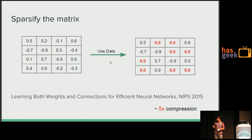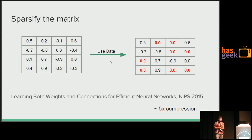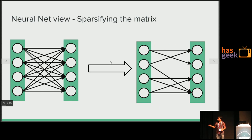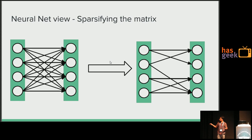This is one transformation commonly used to compress neural networks. Once you have a trained neural network with a dense matrix, you convert that dense matrix to a sparse matrix — an optimization problem which takes into account data to create sparse matrices. In the neural network view, many connections between layers become missing because they're all zeros. This is a much simpler, faster neural network that is also a lot easier to store.